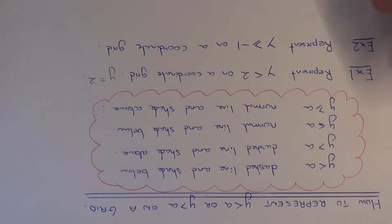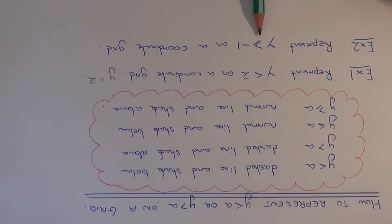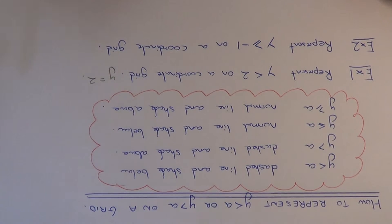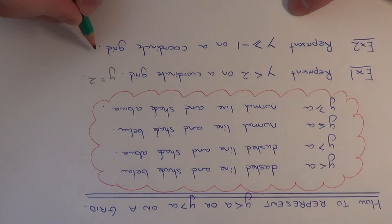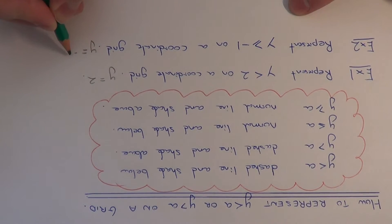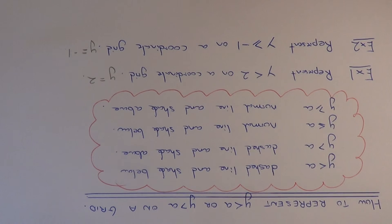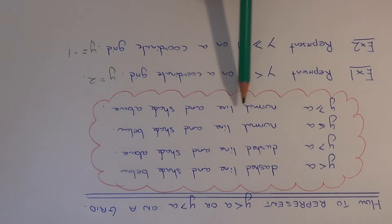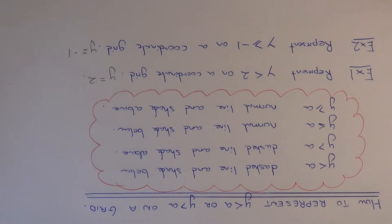Now for example 2, we need to represent y is more than or equal to minus 1 on a coordinate grid. Again, we think about how to draw the line y equals minus 1 — a horizontal line going through the y-axis at minus 1. For more than or equal to, we use a normal line and shade above the line.